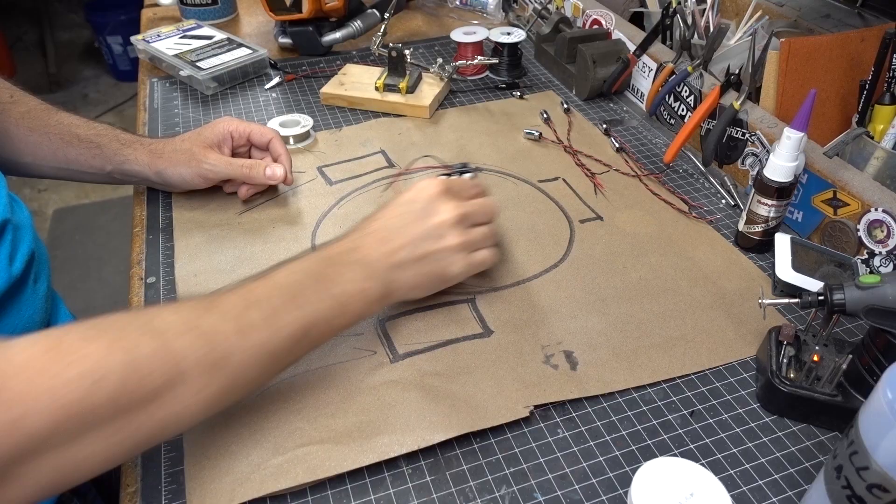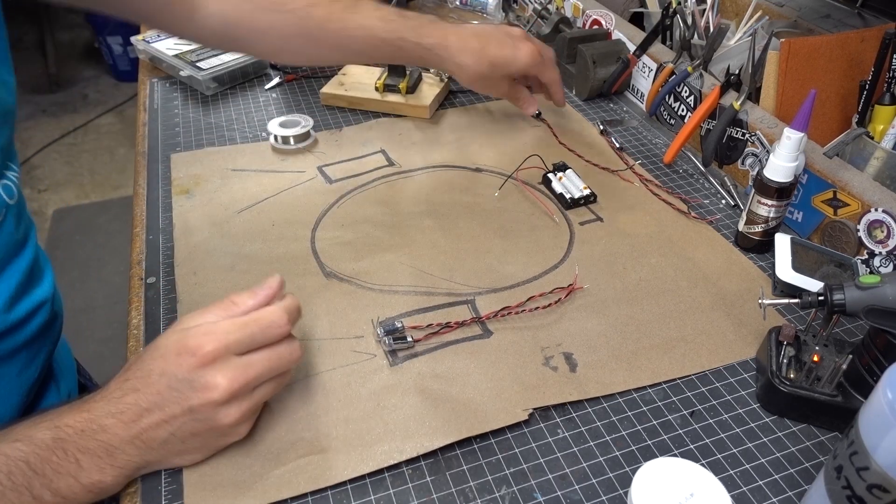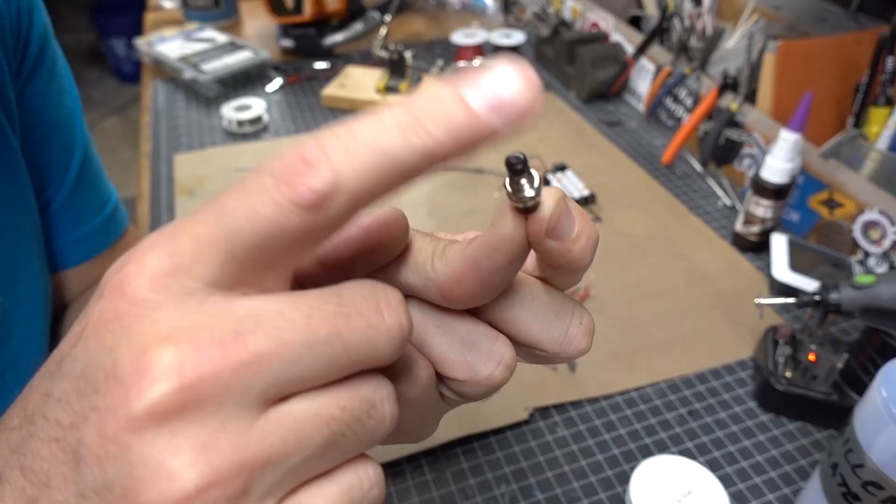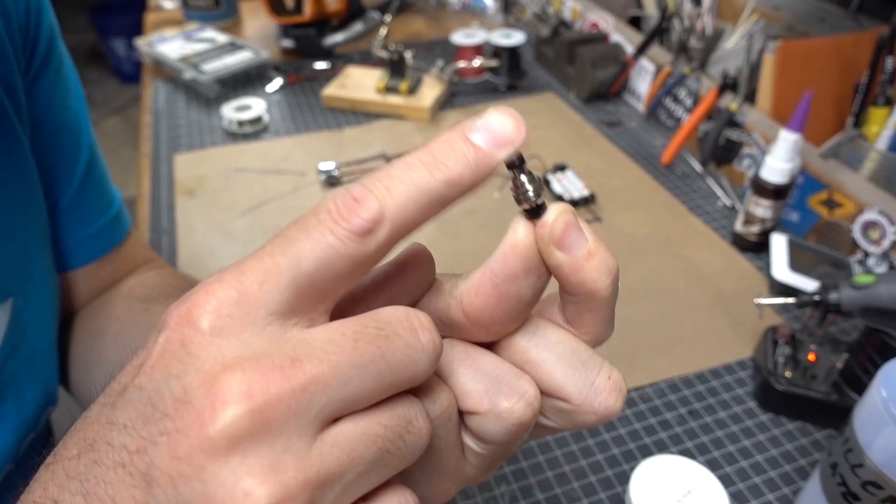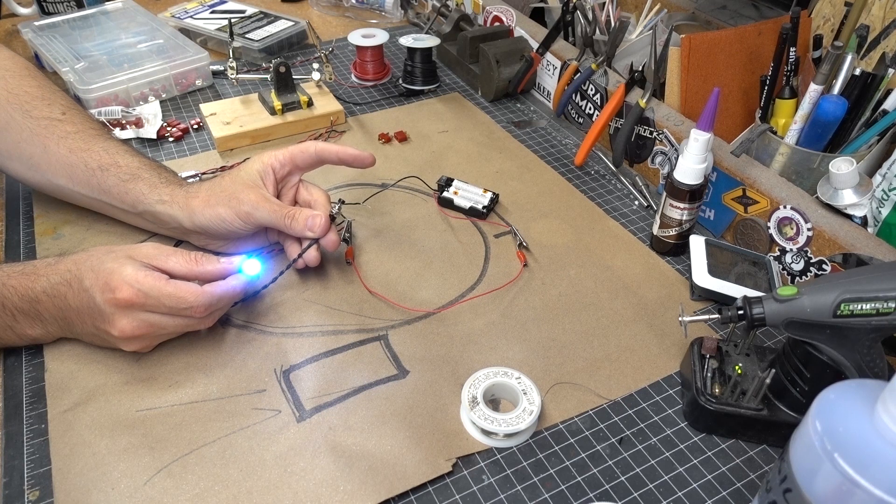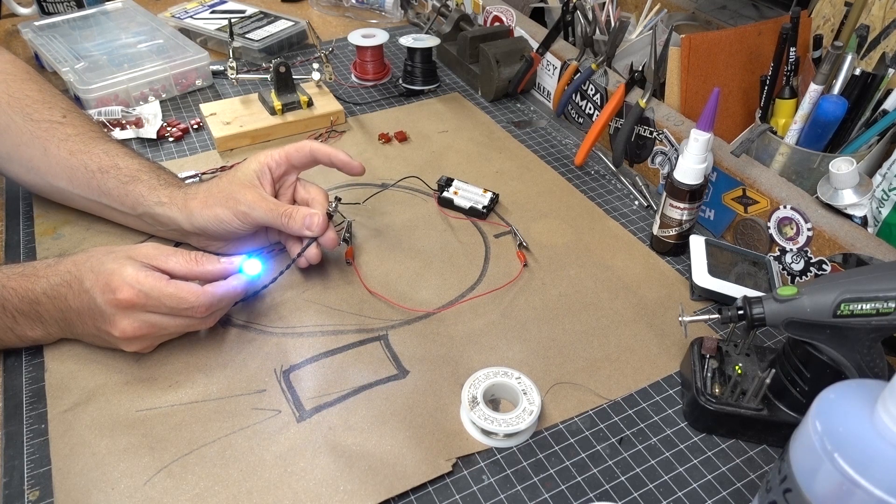I then laid out a basic map for where all of these components would end up inside of Britney's helmet. To make the eyes blink I used a momentary NC switch. This is a switch that is always on except for when you push the button which interrupts the circuit.